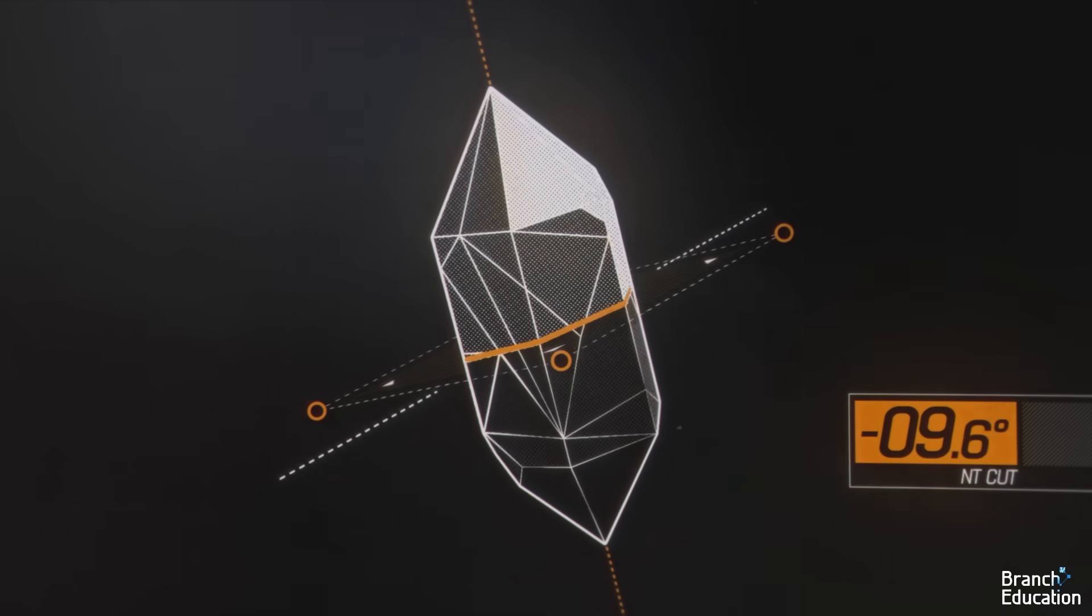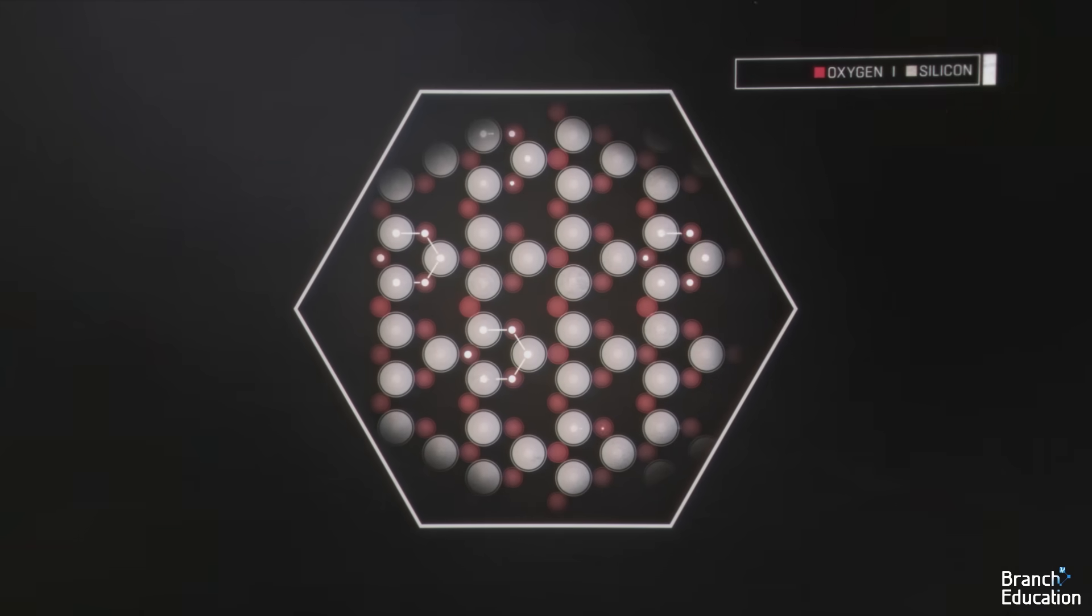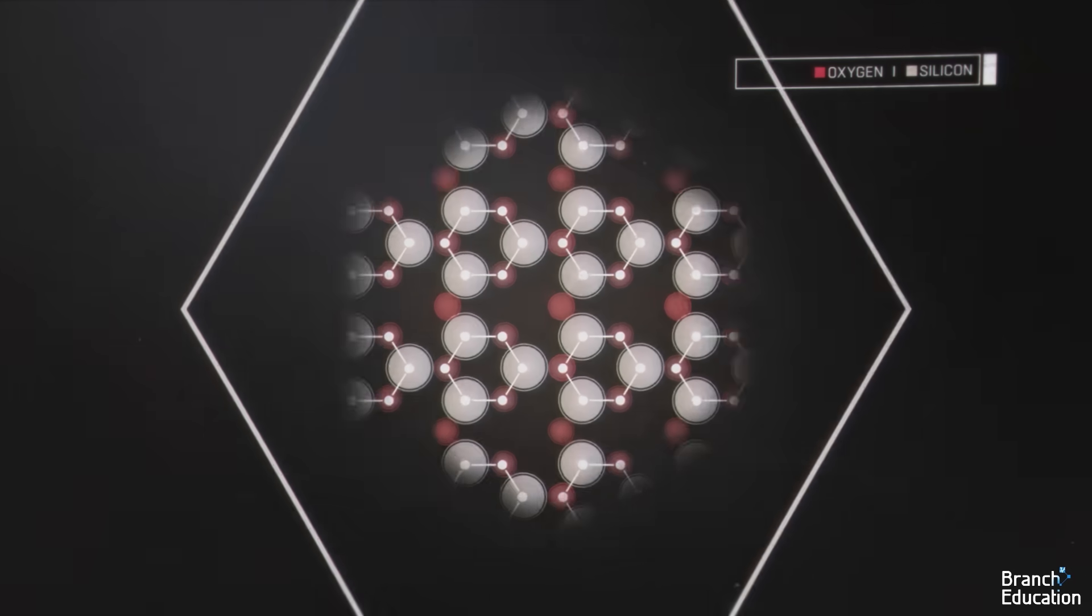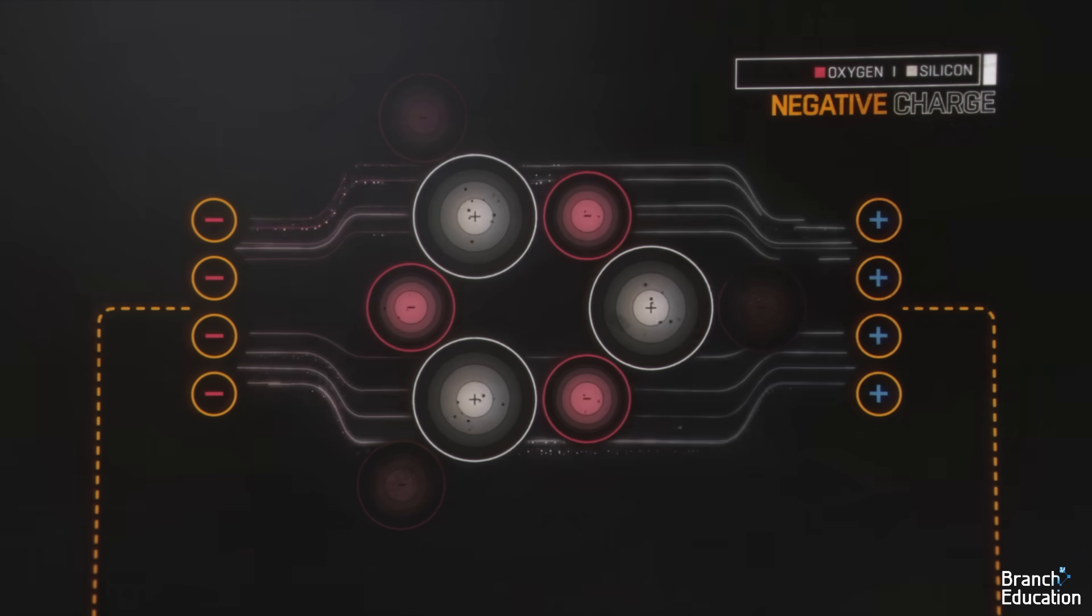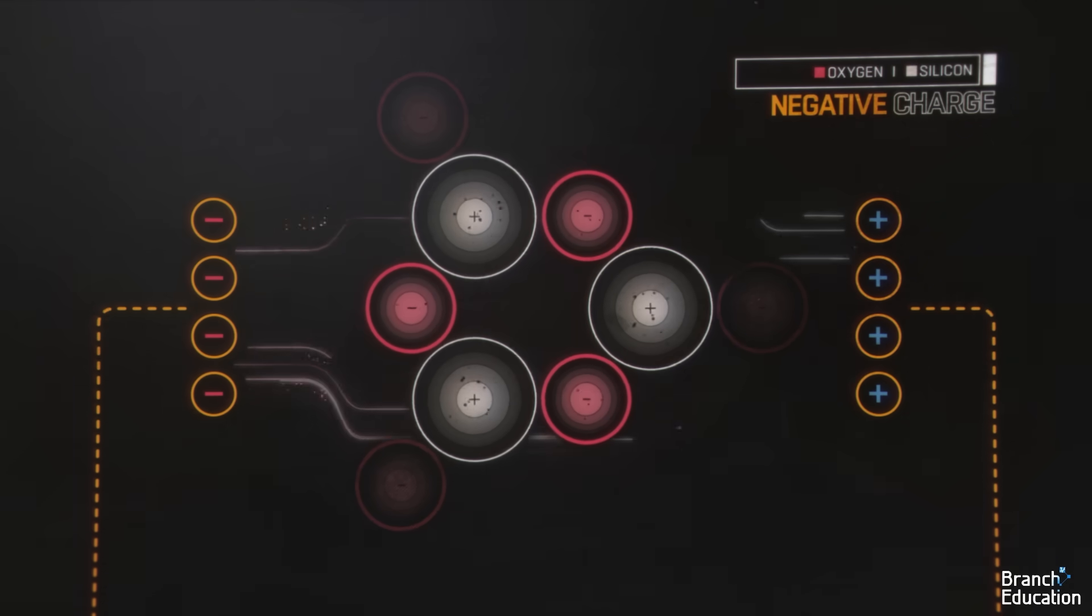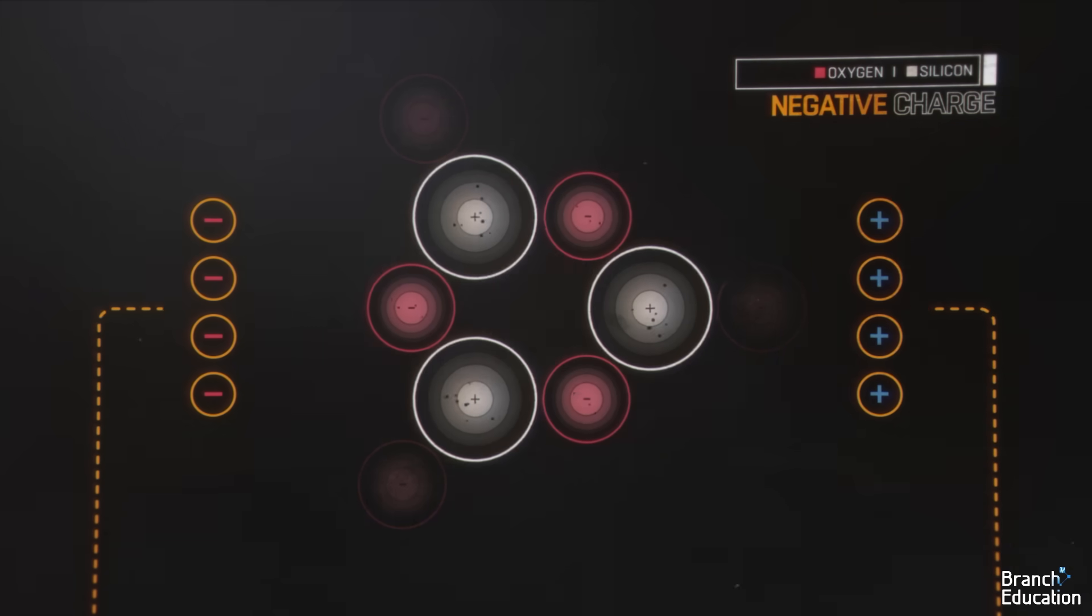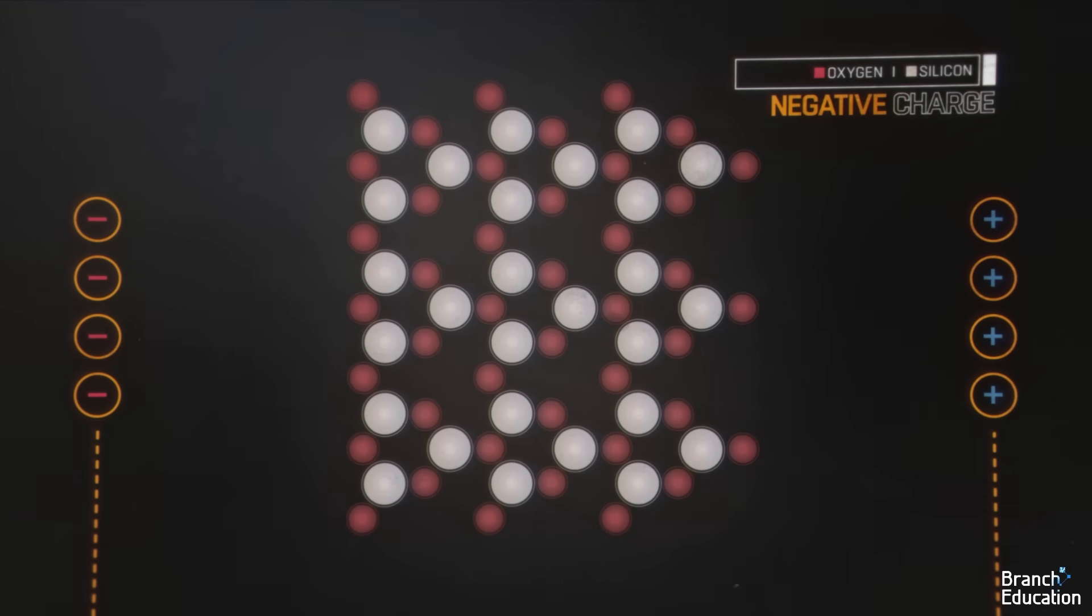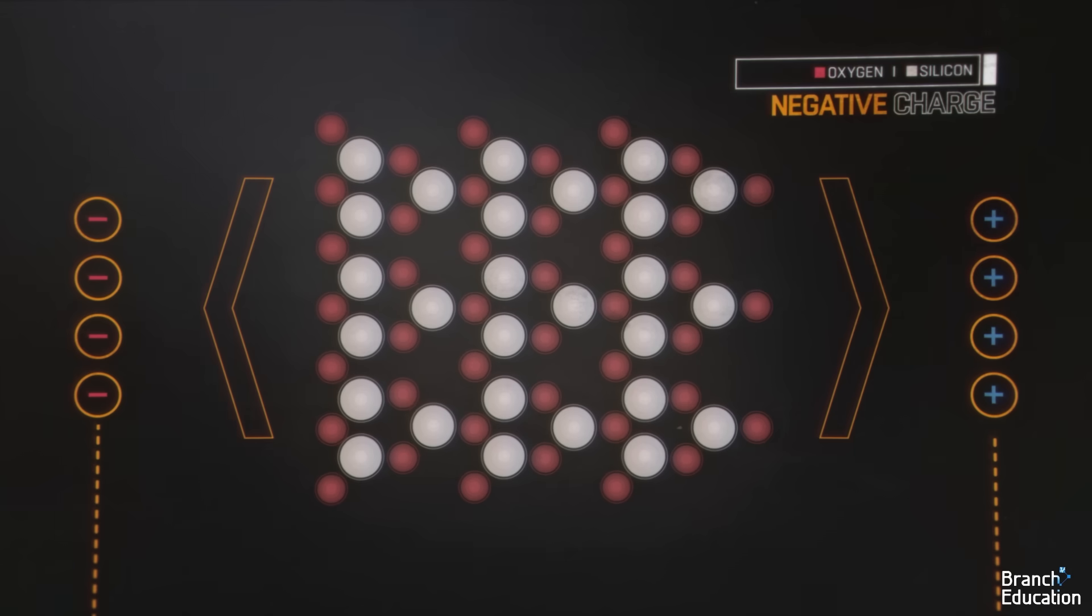When you cut a slice of quartz in a particular direction, you can see repeating sections of a crystal lattice with a hexagonal organization of oxygen and silicon. When a negative charge is applied to the printed wires, an electric field is directed to the crystal lattice and the negatively charged oxygen atoms are pushed away whereas the positively charged silicon is pulled towards the wire. The combined movement of all the oxygen moving away and the silicon moving towards the wire results in a lengthening of the crystal lattice.